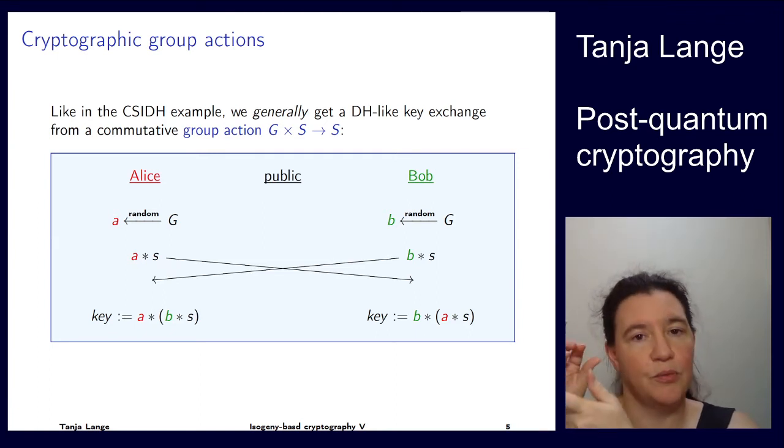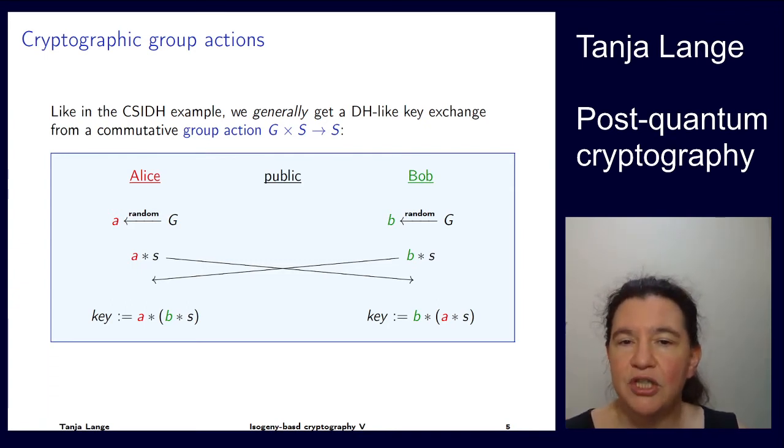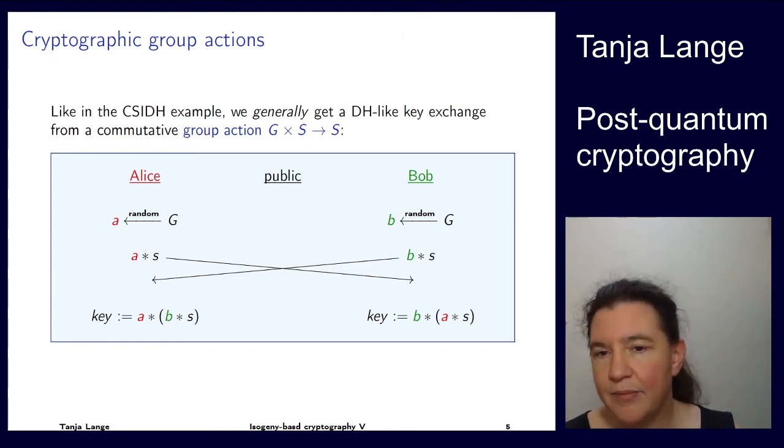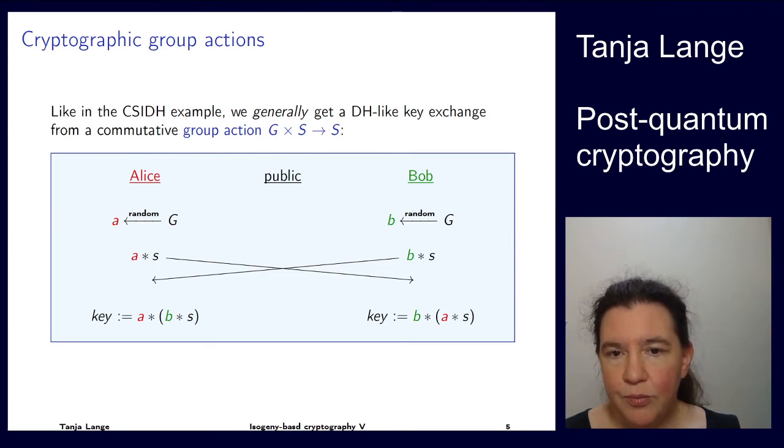If you have a group action, we're thinking we have a commutative group G acting on the set S, such that the normal properties hold—we can pick two group elements on the same element and get composition each way. Both sample a random group element and operate with the group element on the set S, and then both parts get the same result.